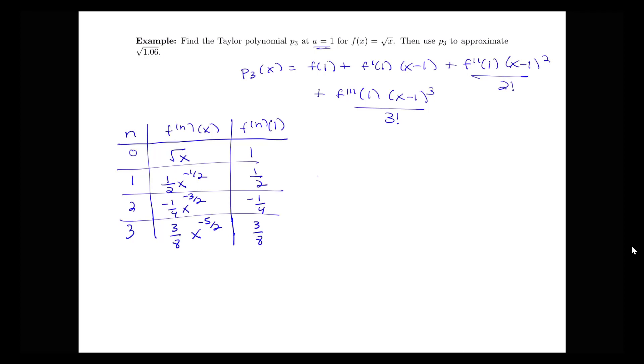I can now write down what my P3 of x is. P3(x) will be the value of the function at 1, which is 1, plus the value of the first derivative at 1, so that's 1/2 times (x-1). The second derivative at 1 is this -1/4. I'll have that times (x-1)² over 2 factorial. And then I'm going to have my third derivative at 1, which is 3/8 times (x-1)³ all over 3 factorial.